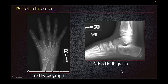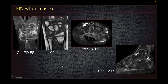On the ankle radiograph, we do not detect significant joint effusion or soft tissue swelling in the ankle. There is a normal apophysis at the calcaneus. The patient then went for MRI without contrast.